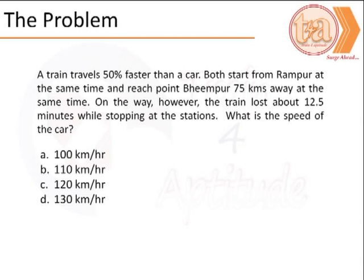A train travels 50% faster than a car. Both start from Rampur at the same time and reach point Bhimpur 75 km away at the same time. On the way, however, the train lost about 12.5 minutes while stopping at the stations.